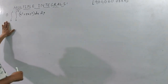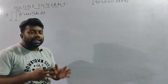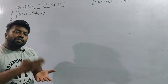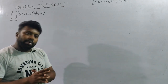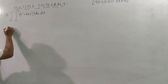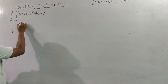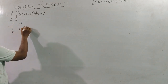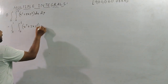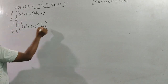The first question: evaluate the double integral from 0 to 1, 0 to 2, of x² + 3xy², whole bracket, dx dy. So you have to work with x and y. Let's go. What do you see? From 0 to 1 and 0 to 2, we have x² + 3xy², whole bracket, dx dy.